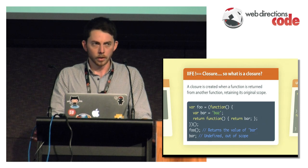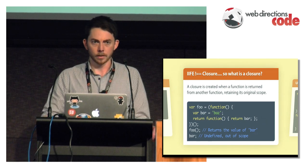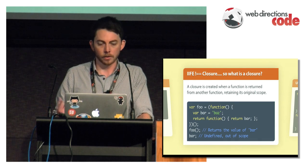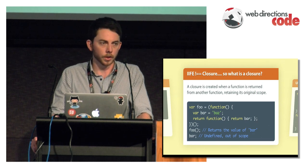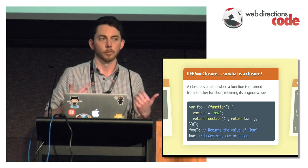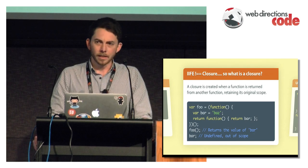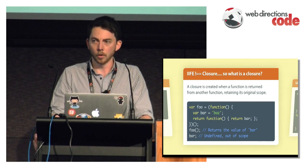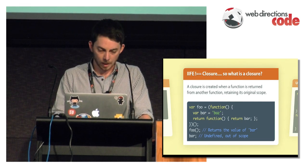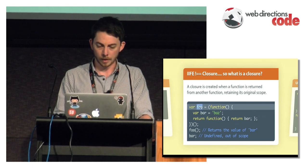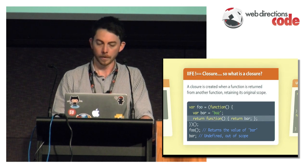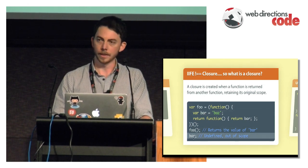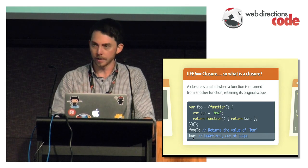Just to clear things up: a lot of people think that IIFEs are closures, and that's not true. So what exactly is a closure? A closure is created when a function is returned from another function, but the important part is that the function that's been returned retains its original scope. It's expected behavior. Quite a lot of people stumble across closures and only later find out what they're called, because they just kind of make sense when you need them. Here, foo ends up being this function, and when called, it returns the value of a variable that's hidden away in a different scope which is not available in the global scope. This is a closure.